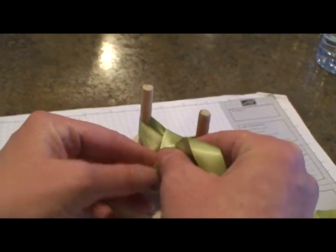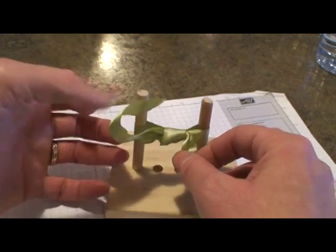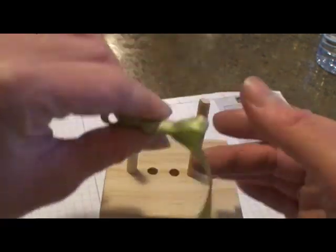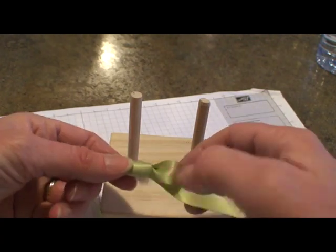Then you just make a single knot, pull it off, and voila, your bow is perfect.